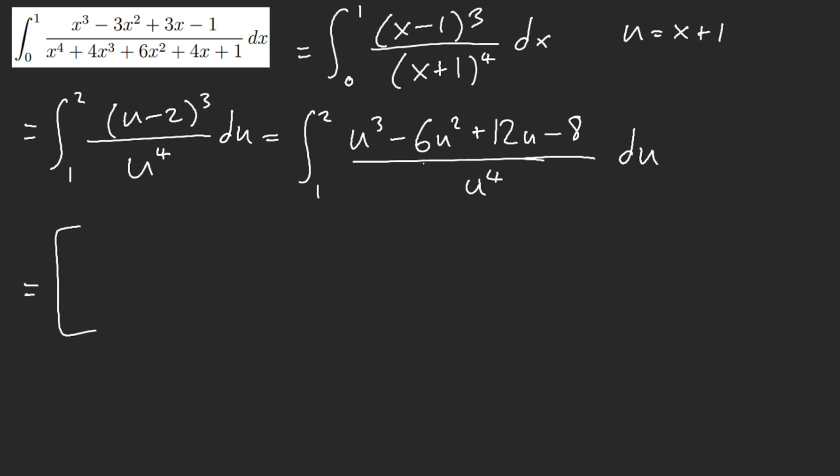So pretty much we have 1 over u, which is ln of u, plus 6u squared. I'm sorry, no, no, no, 6 over u, this is 1 over u squared already, minus, and this is 3 over u cubed, sorry, 12 over u cubed. So it's going to be u square, sorry, 6 over u squared, and then plus, um, this is 8, 3u cubed. And then all from 1 to 2.